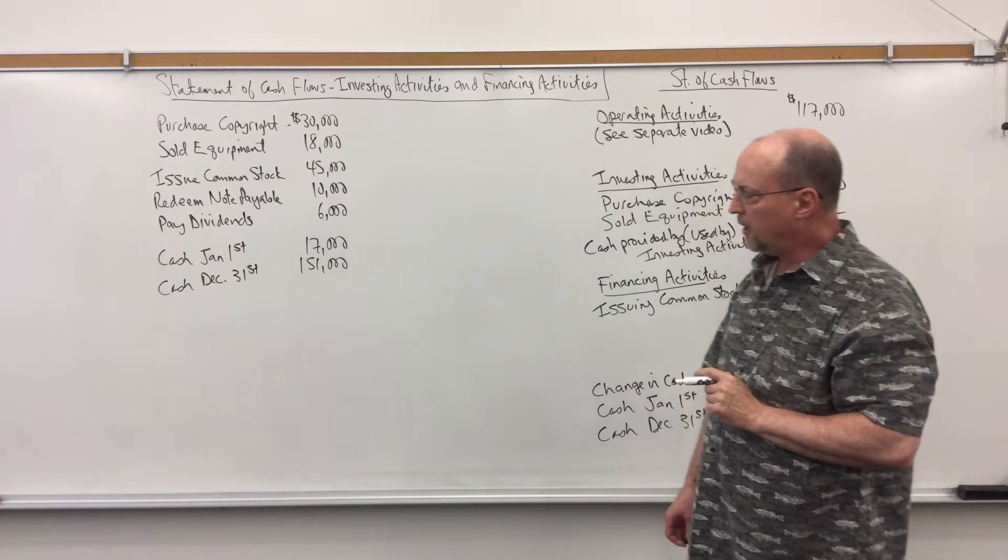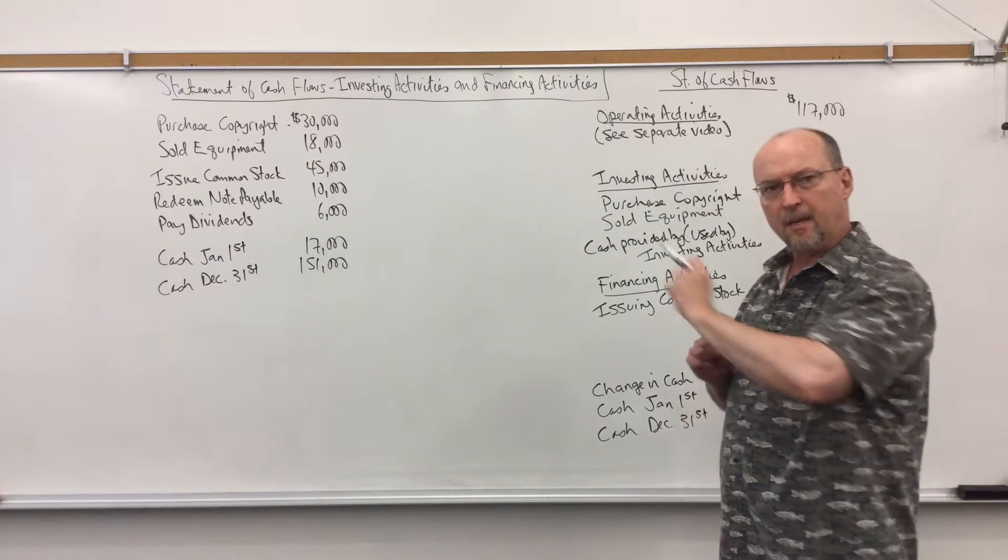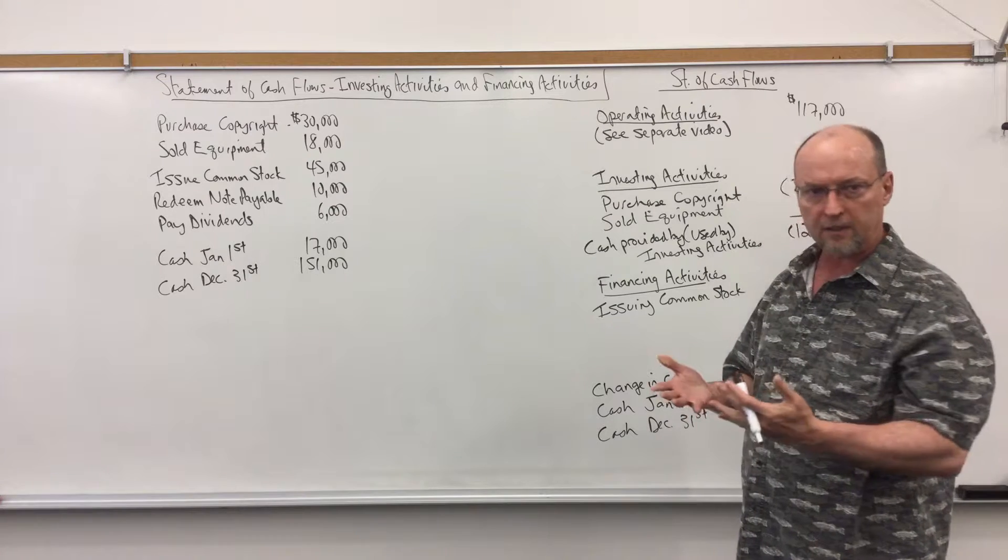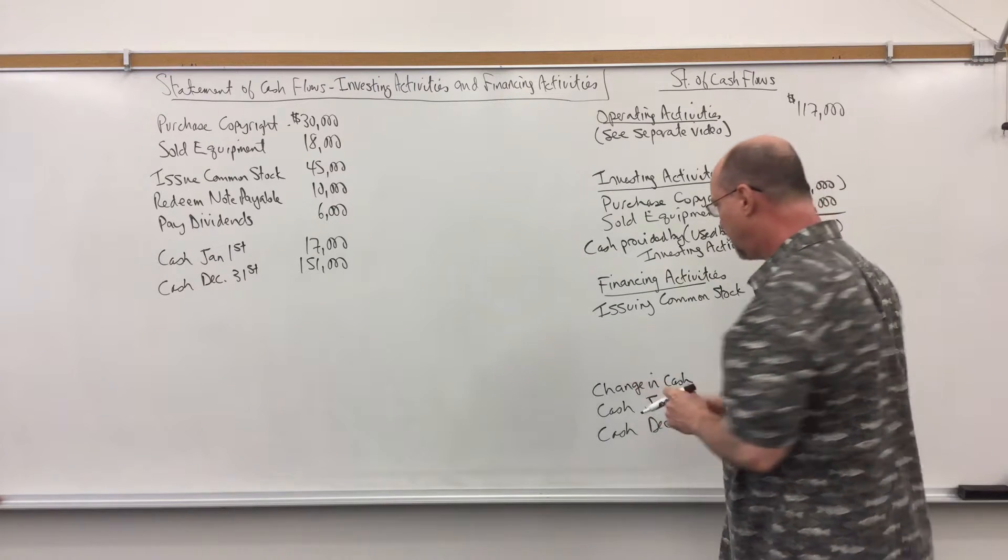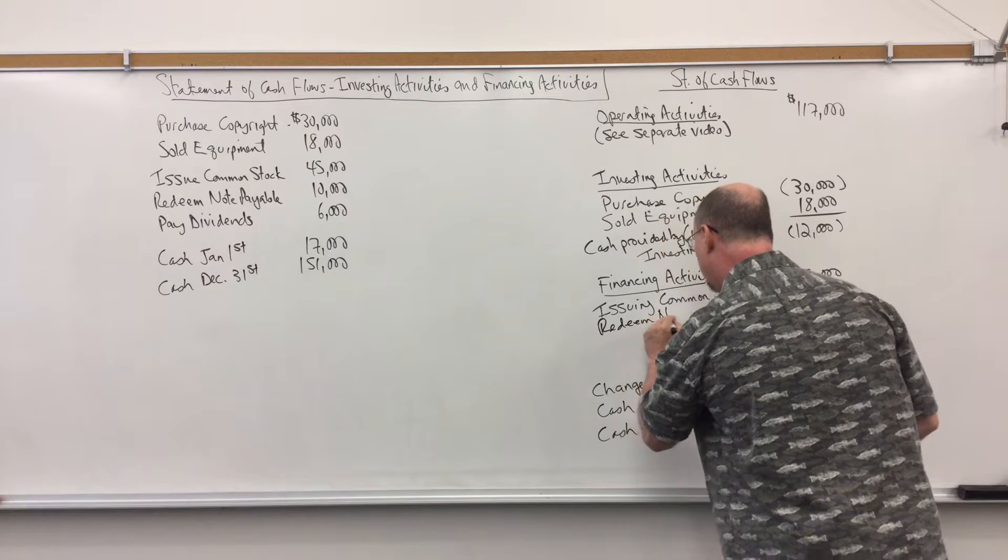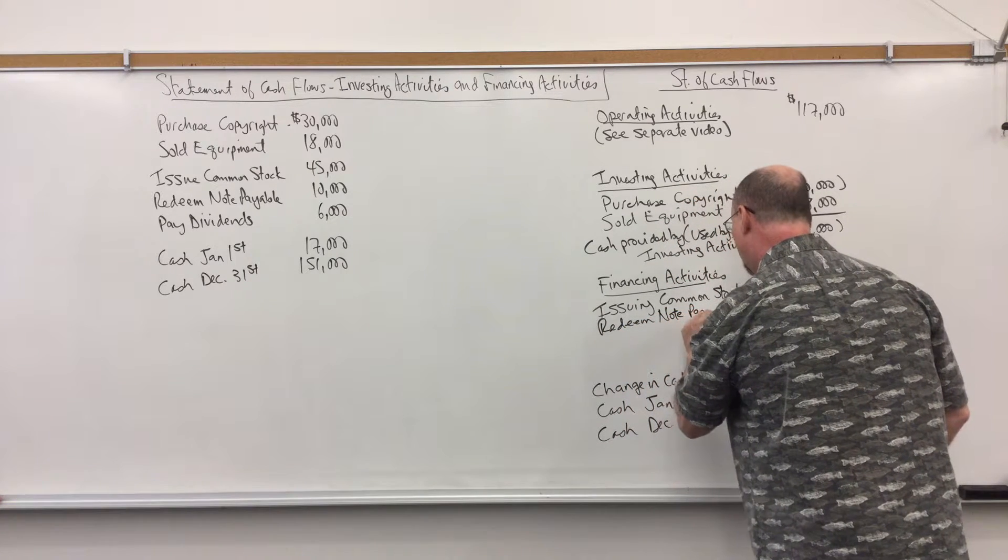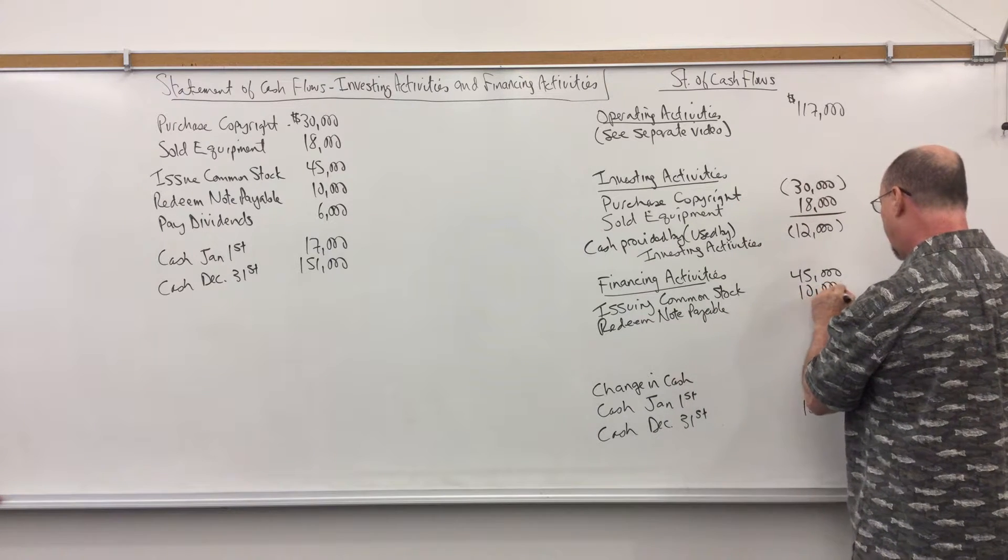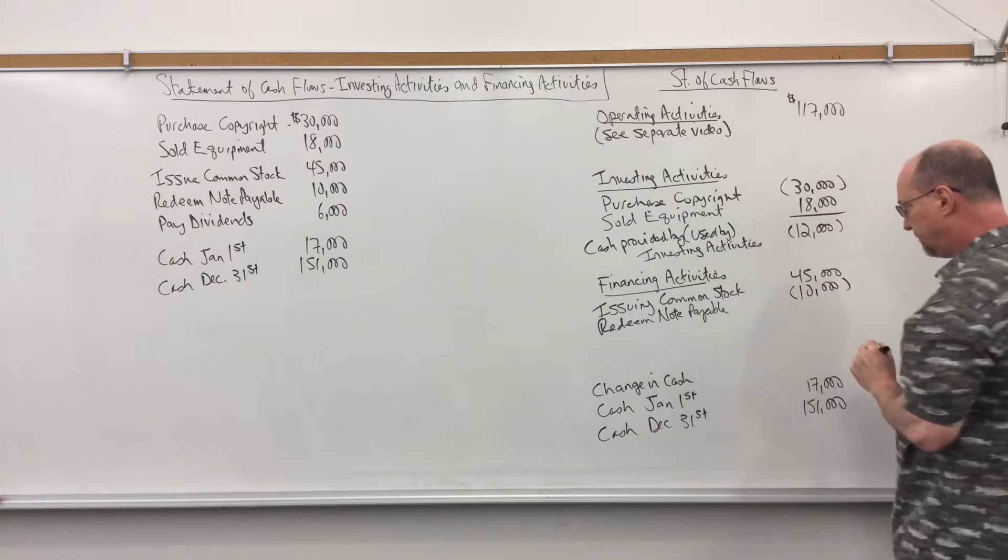Then I redeemed a notes payable. Redeemed means I paid it back on the maturity date. So redeeming notes payable or bonds payable is a use of cash. So redeem note payable for $10,000. That is a use of cash so I'll put brackets around it.